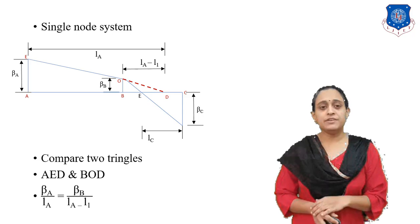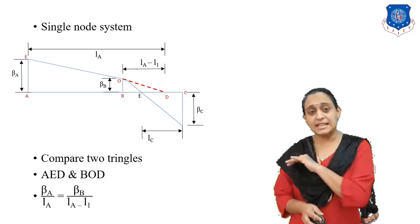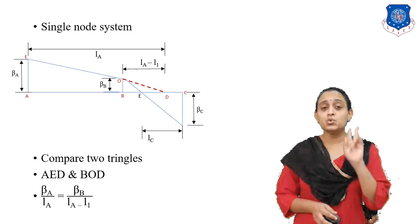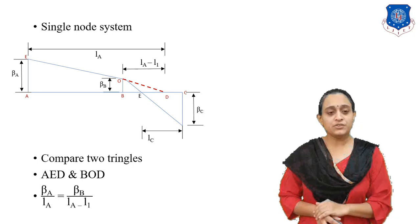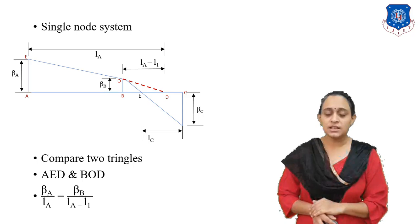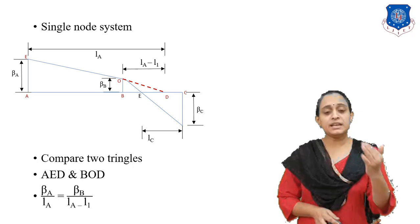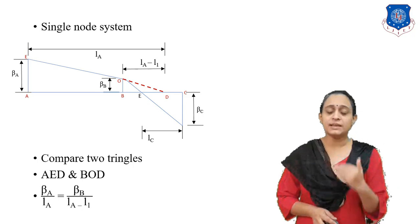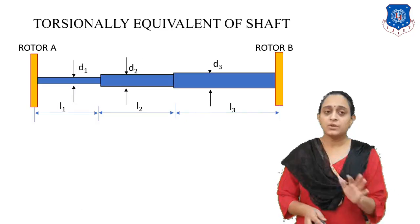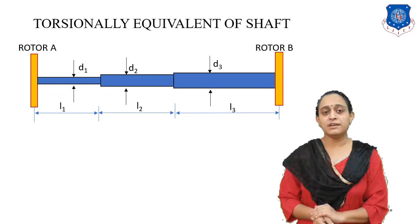In this case we have to extend the length L_O to match the baseline known as AC. By enlarging that line we get two equivalent triangles, named AED and POD. Comparing beta for both triangles, we get: beta_A by I_A equals beta_B upon (I_A minus L1). This is our standard equation.